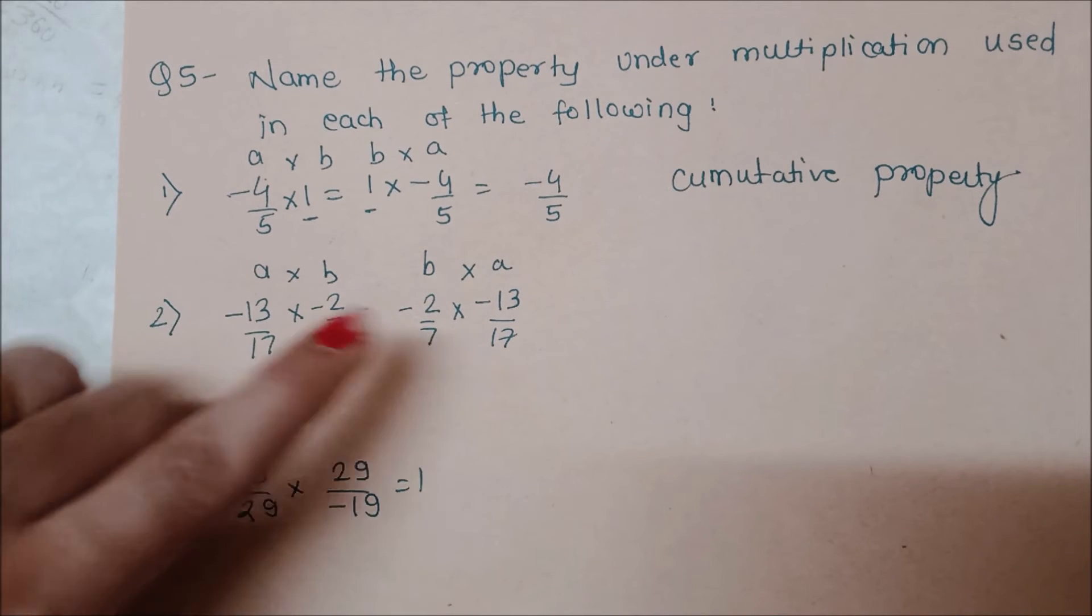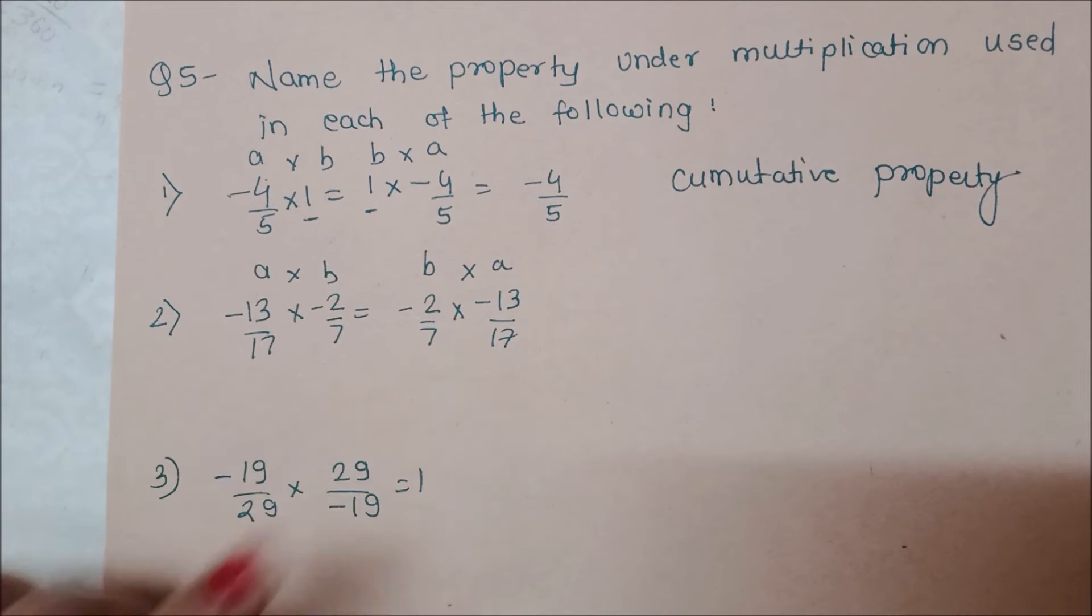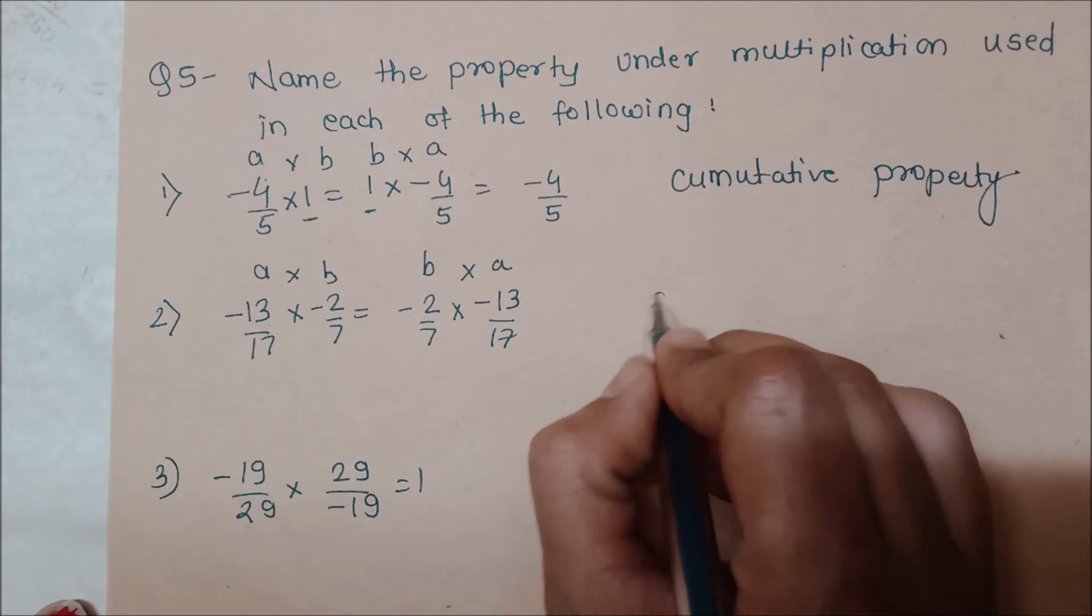Here is the same where A into B, and in the second one, B into A. This is a similar case. So this is commutative property.